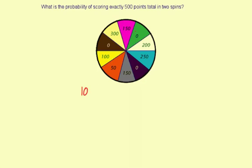We have to figure out, how do you score 500 points in two spins? Let's see, you could do—well, there's a 250. You could spin 250 twice in a row, so probability of 250 and then 250 again.